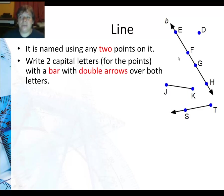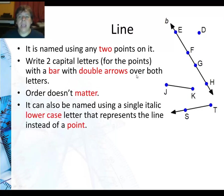And the way we write it is we write two capital letters for the points with a bar with double arrows. That means arrows on each end. Order for a line does not matter. So you can say F, G, or G, F. And it can also be named using a single italic lowercase letter that represents a line instead of a point. Remember this lowercase b we were talking about? That is actually the name for this line. So there are many different names for this line.